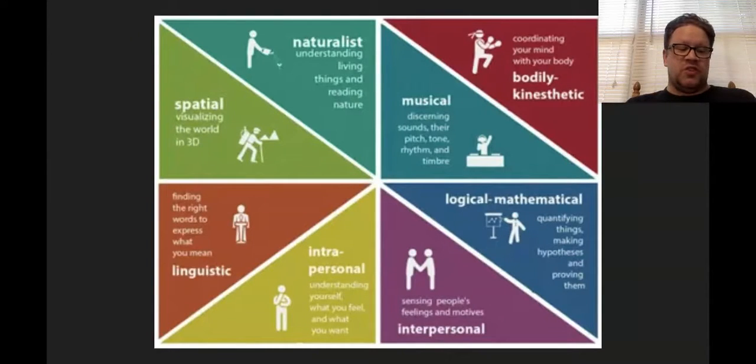Naturalist intelligence is the ability to recognize the patterns found in nature, like farmers, biologists, ecologists, landscapers. Interpersonal intelligence is the ability to understand and be sensitive to the emotional states of others, like counselors, social workers, salespersons. Intrapersonal intelligence refers to the ability to access personal feelings and motivations. Various people-oriented careers would see this.